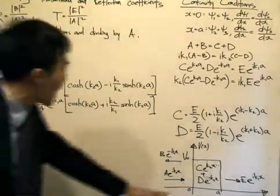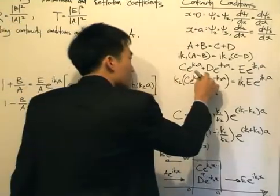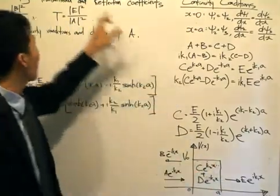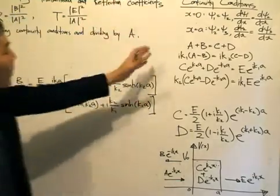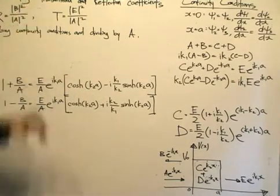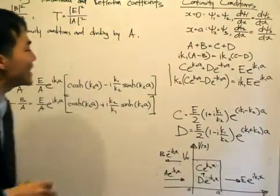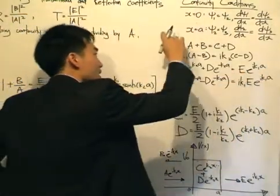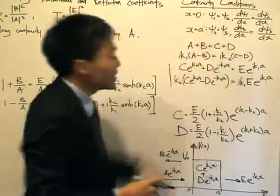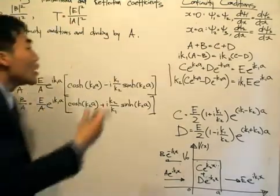We apply the continuity conditions at x equals zero and x equals a, giving us these four equations. Notice that C and D, belonging to the evanescent wave inside the barrier, do come up in those equations. What we want to do is use the four equations to somehow eliminate C and D so that we just have equations in terms of A, B, and E. The strategy is to use the bottom two equations to write C and D in terms of E, then substitute into the top two equations to get two equations in terms of A, B, and E.